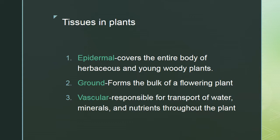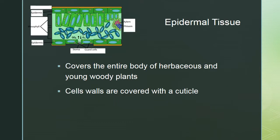Starting with epidermal tissue: in a cross section of a leaf, the epidermis covers the bottom and top side of the leaf and the outside of the plant. Sometimes it has a waxy cuticle over the top that protects it and prevents desiccation. These epidermal tissues can also have special modifications.